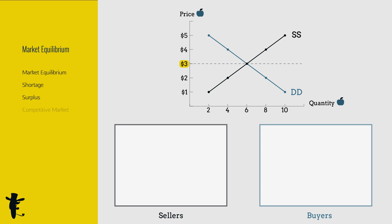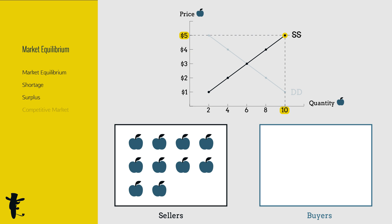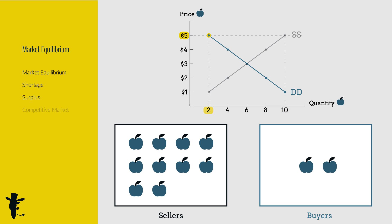At a price above market equilibrium, say at five dollars, sellers want to sell this amount, buyers want this amount. There is a surplus.